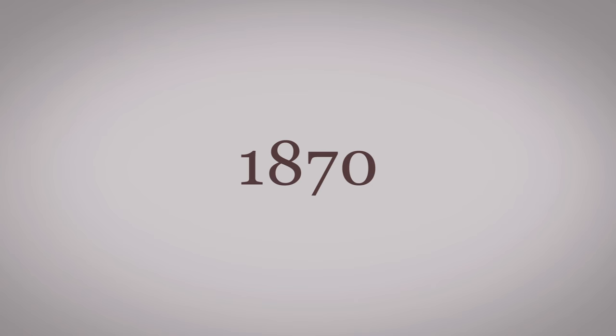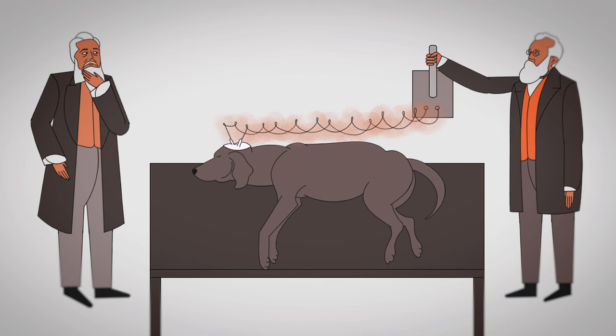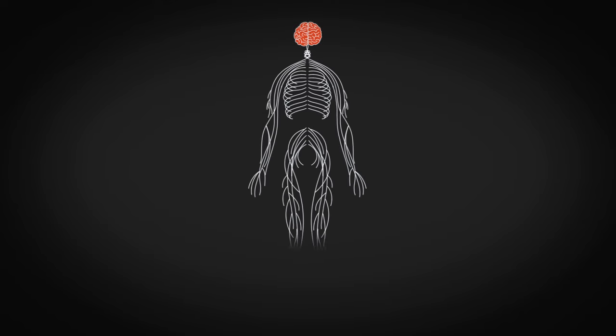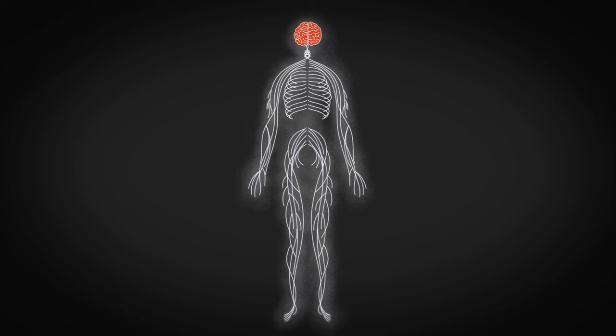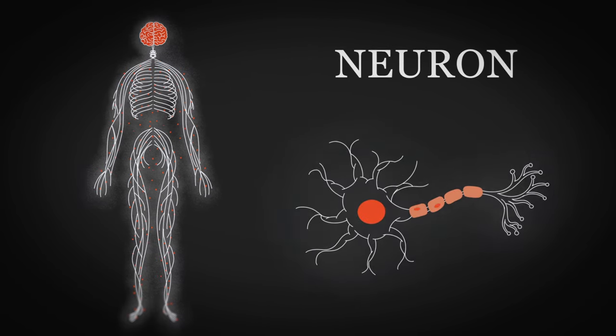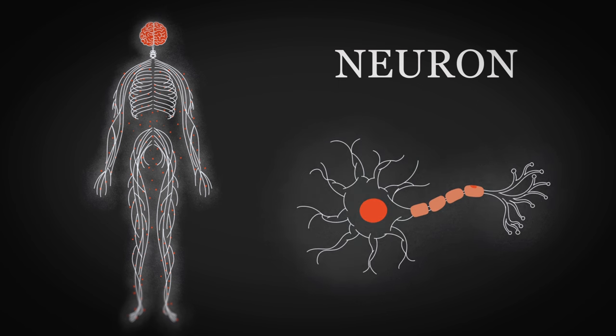In 1870, two German researchers discovered that using electricity to stimulate specific areas of a dog's brain could move parts of its body. Around the same time, other scientists discovered the brain and nervous system were connected via a network of cells called neurons that transmitted electrical signals throughout the body.